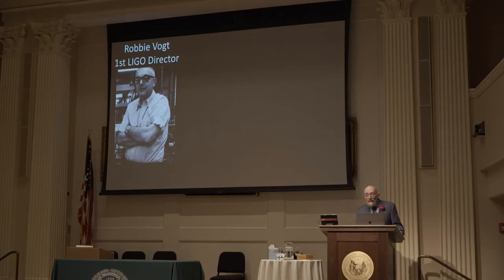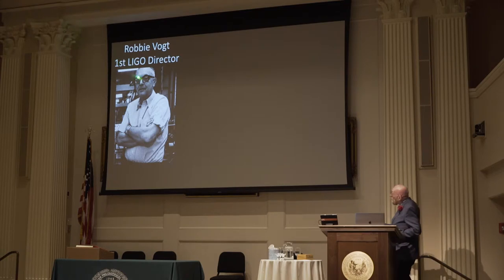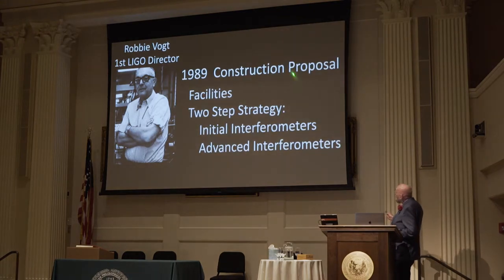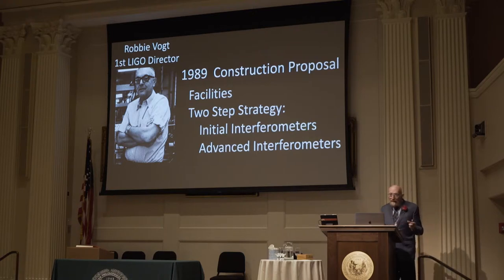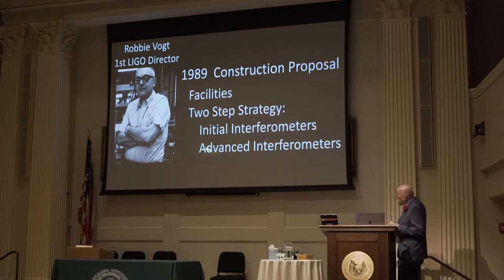A committee in November of 1986 — triggered by Dick Garwin — looked at what we were doing and said: you're crazy, you can't run a project with Drever, Weiss, and Thorne trying to run it; you're a dysfunctional leadership. You have to have a real director who has ultimate control. So we brought on Robbie Vogt, who had been the first chief scientist at JPL and provost at Caltech. He led us in 1989 through writing a superb construction proposal in which we said we would first build the facilities to house these interferometers at two different locations in the United States, then build an initial set of interferometers that would probably not see anything, and then build advanced interferometers with a high probability of success.